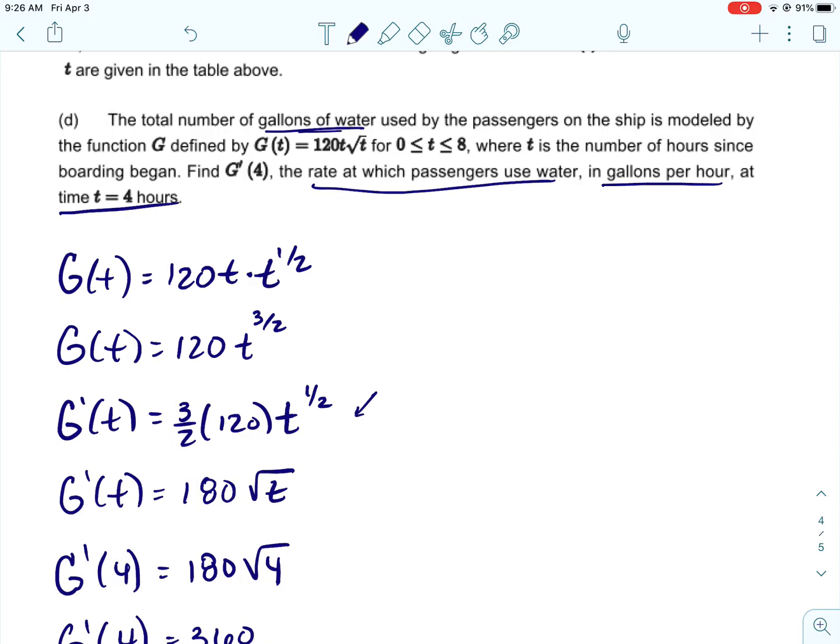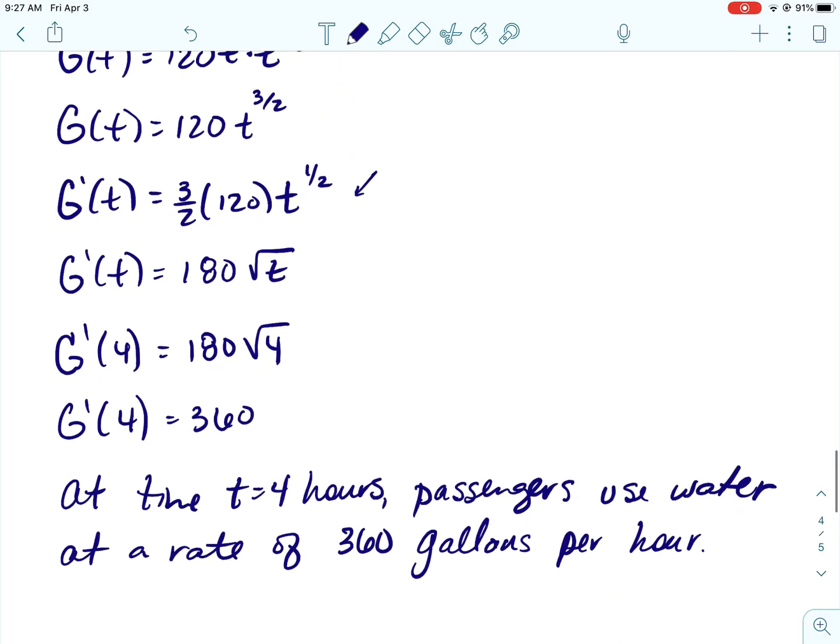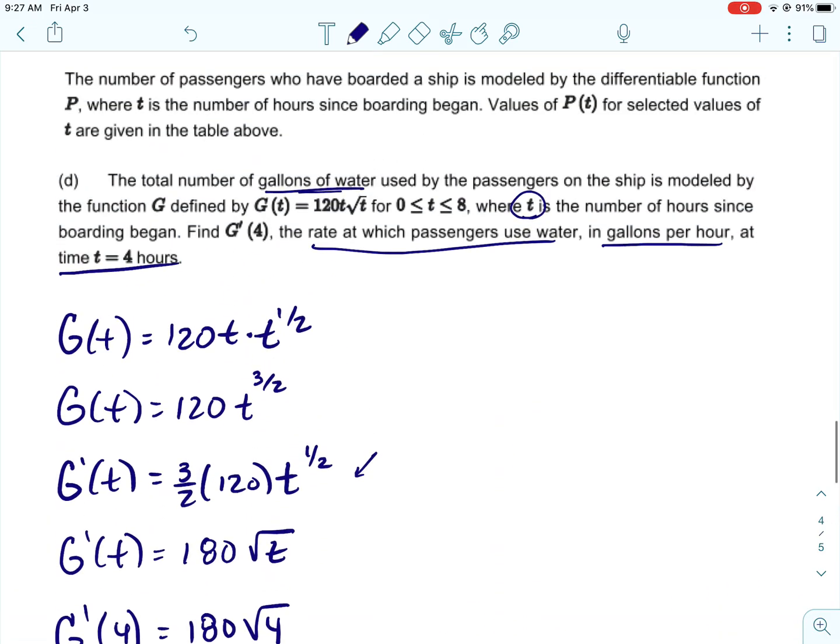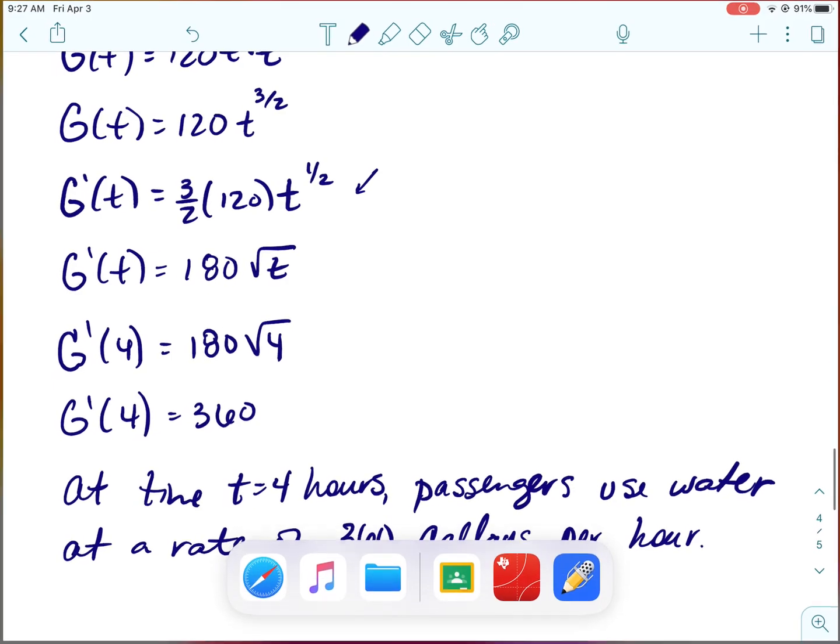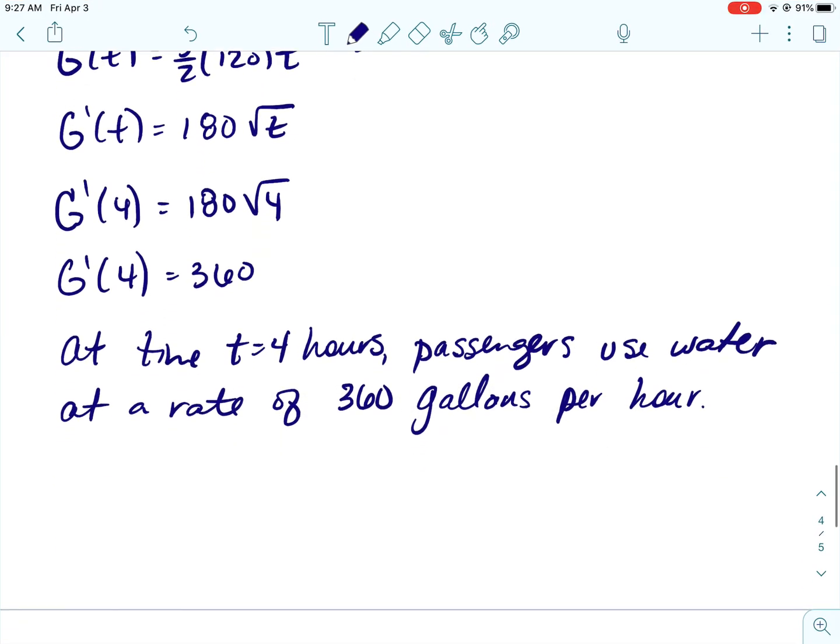So remember, whenever we are finding the derivative, and if the original function was gallons, yeah, gallons of water used, when we find the derivative, you're basically dividing by the independent variable with your unit. So that gallons becomes gallons per hour. And then if you guys remember, when we do the integral, you're multiplying by that unit. So it changes things. But anyway, we'll review all the bunch of stuff.